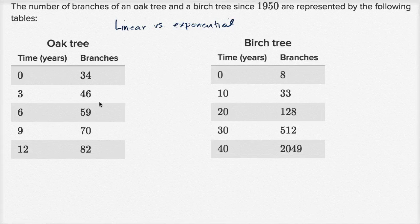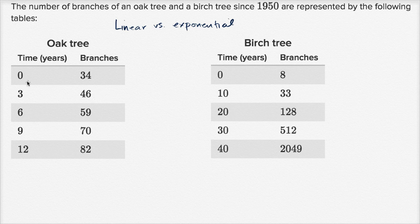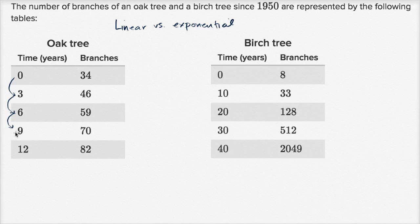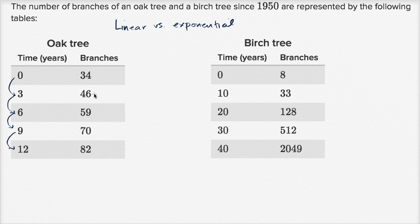So let's first look at the oak tree. The key realization is whenever I have a fixed increase in time, so each of these steps, this is plus three years, a fixed increase in time. What happens to my number of branches? Is it going to be a fixed change, or roughly a fixed change, in which case a linear model might be good? Or is it going to be a change that's dependent on where we were?